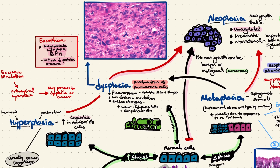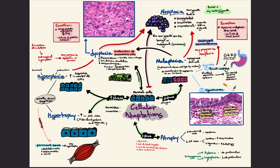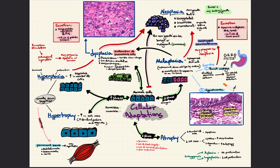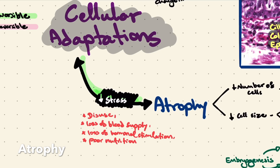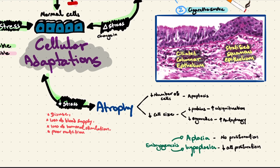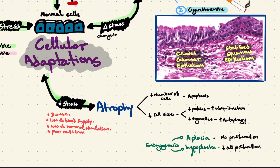Now let's look at atrophy and metaplasia. Our cells respond to a decrease in stress by atrophy — a reduction in cell number and cell size. This is the opposite of hyperplasia and hypertrophy. The reduced stress could be a result of disuse, loss of blood supply, loss of hormonal stimulation, or poor nutrition.